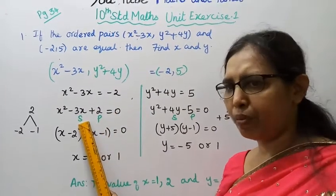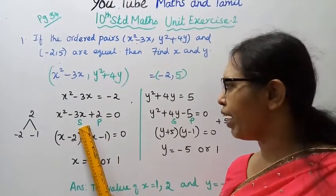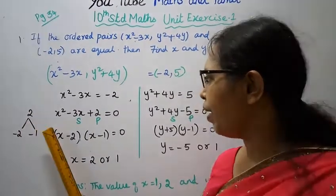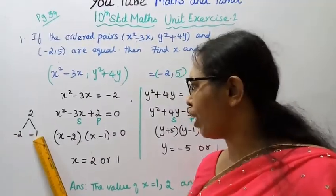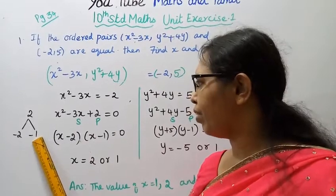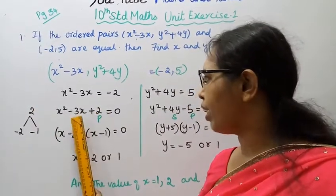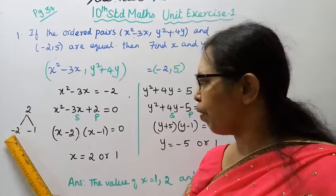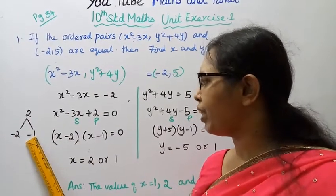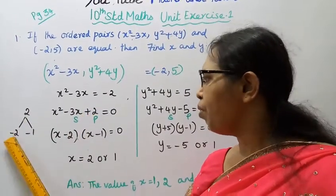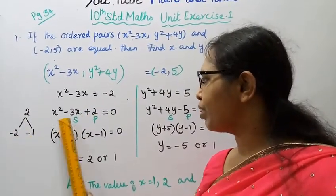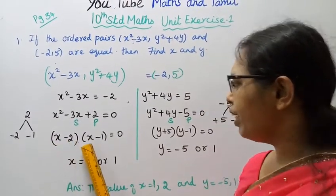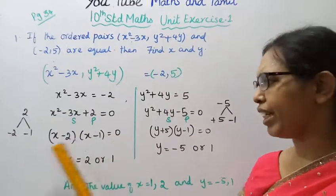To factorize, we find two numbers whose product is +2 and whose sum is -3. That gives us -2 and -1, since (-2)×(-1) = 2 and (-2)+(-1) = -3. So (x-2)(x-1) is equal to 0.